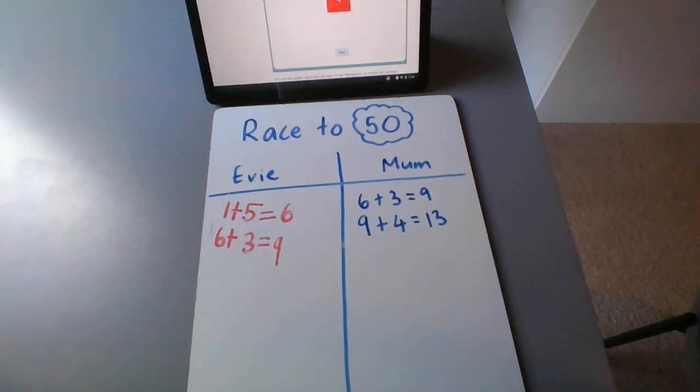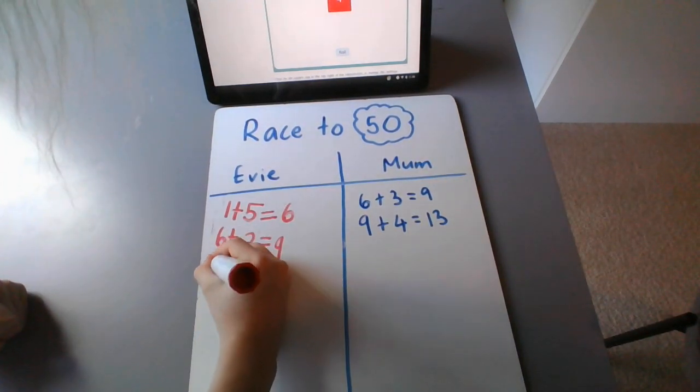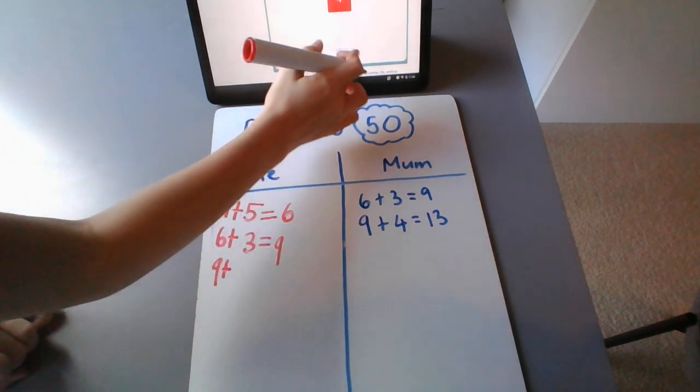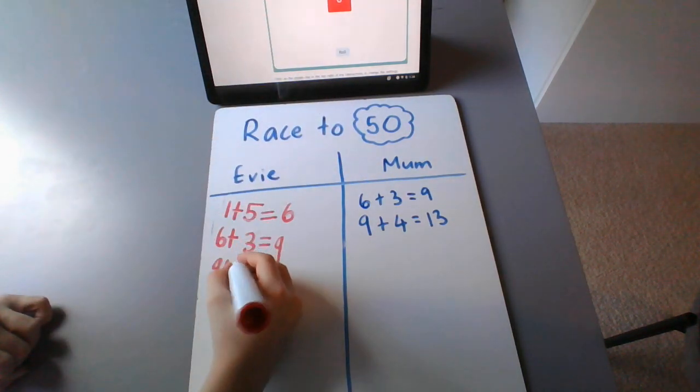Evie's turn. She's going to move her nine, the answer from the last sum, down below. And she's going to roll again. Nine plus six.